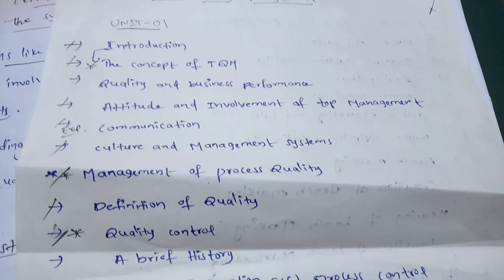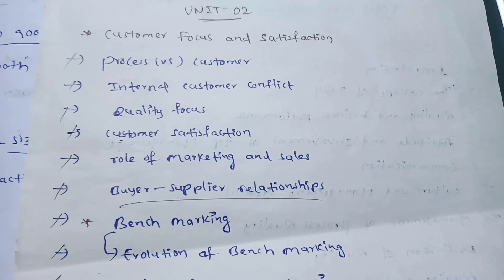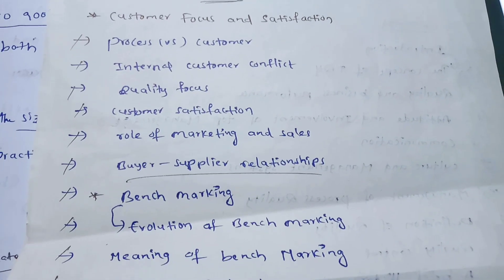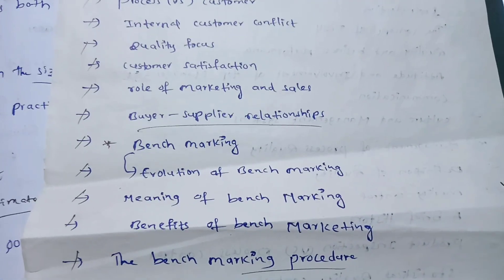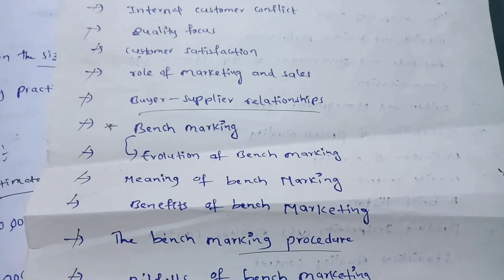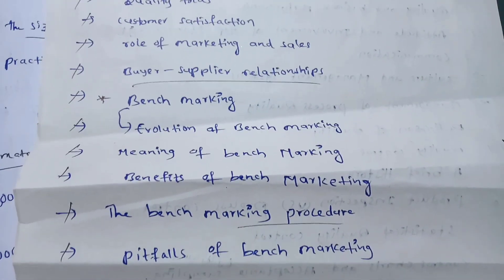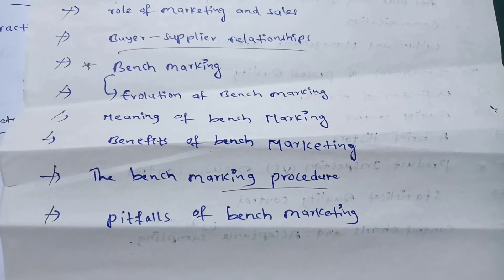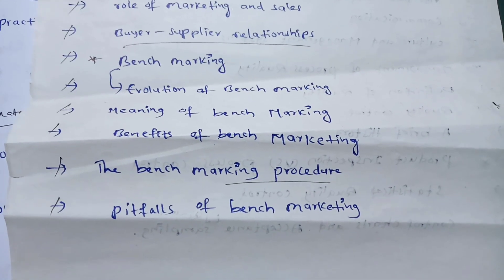Coming to unit two, the topics are customer focus and satisfaction, process versus customer, internal customer conflict, quality focus, customer satisfaction, role of marketing and sales, buyer-supplier relationships, benchmarking, evolution of benchmarking, meaning of benchmarking, benefits of benchmarking, the benchmarking procedure, and pitfalls of benchmarking.